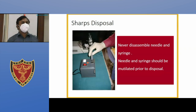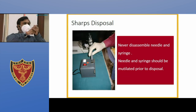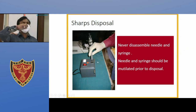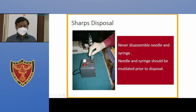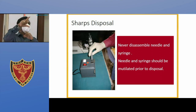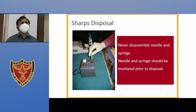For sharps disposal, either put the entire assembly — syringe with needle attached — into the sharps container, or use a needle cutter device where you squeeze a lever that cuts the needle into a metal box, and the remaining plastic syringe goes into the red bag. Best practice is to never disassemble. Once you use the syringe, do not disassemble it.